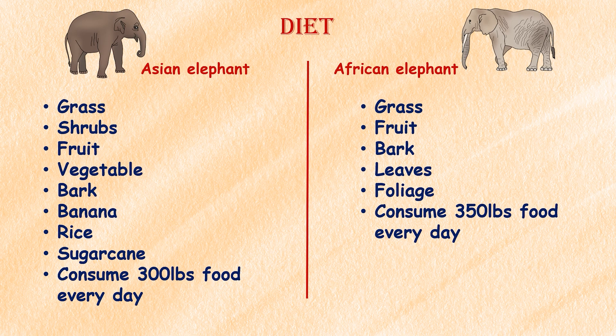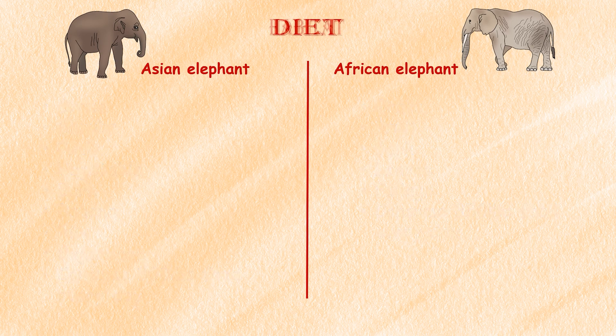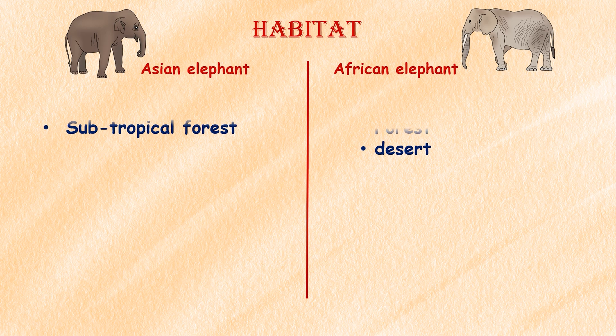Diet: Asian elephants eat grasses, shrubs, fruits, vegetables, and bark. Bananas, rice, and sugarcane are their favorites. In the wild they may consume 300 pounds of food each day and spend 18 to 20 hours foraging and eating. African elephants also spend much of their day foraging, eating grass, leaves, bark, fruit, and a variety of foliage, needing about 350 pounds of vegetation every day.